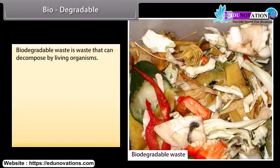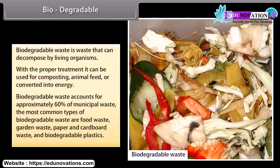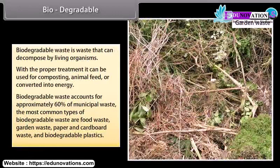Biodegradable waste is waste that can be decomposed by living organisms. With proper treatment, it can be used for composting, animal feed, or converted into energy. Biodegradable waste accounts for approximately 60% of municipal waste. The most common types of biodegradable waste are food waste, garden waste, paper and cardboard waste, and biodegradable plastics.